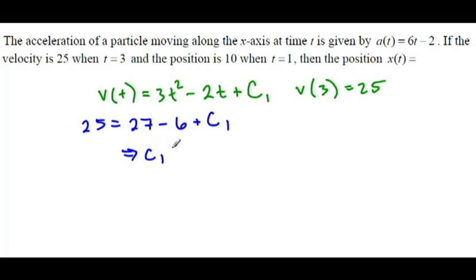27 minus 6 is 21. 25 minus 21 is 4. And so my particular velocity function is given by 3t² - 2t + 4.